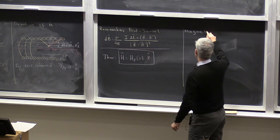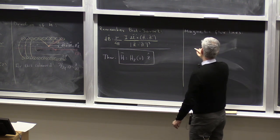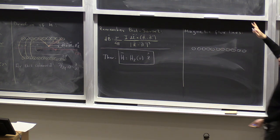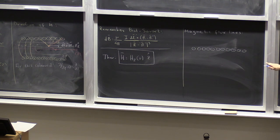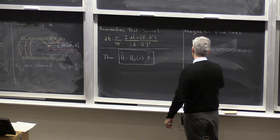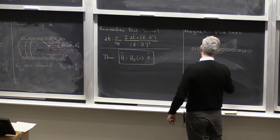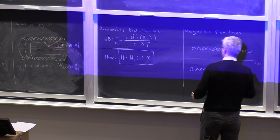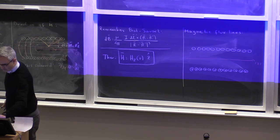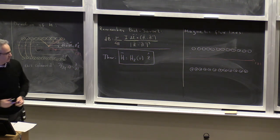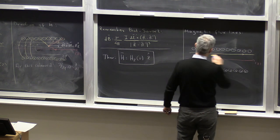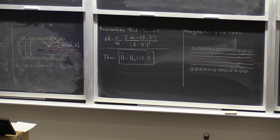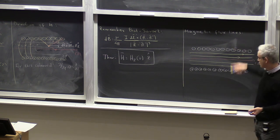The magnetic flux lines have nowhere to escape — the top and bottom are very far away, and the gaps are so small that the magnetic field is concentrated inside the solenoid, going along the z-direction. There is no magnetic field outside.